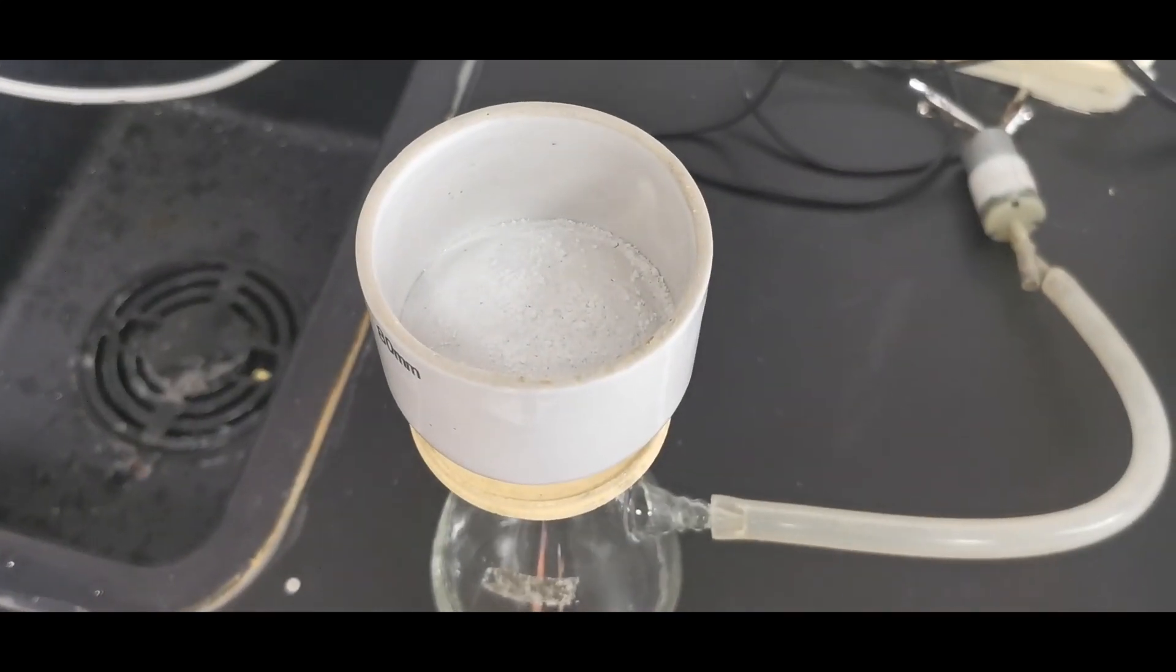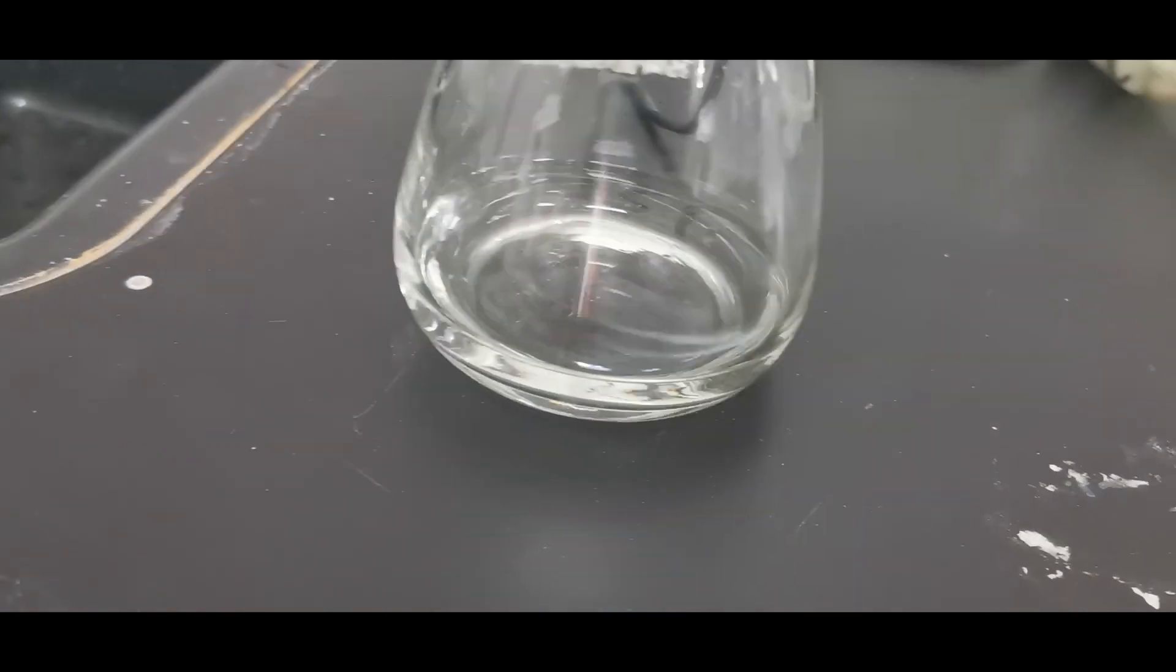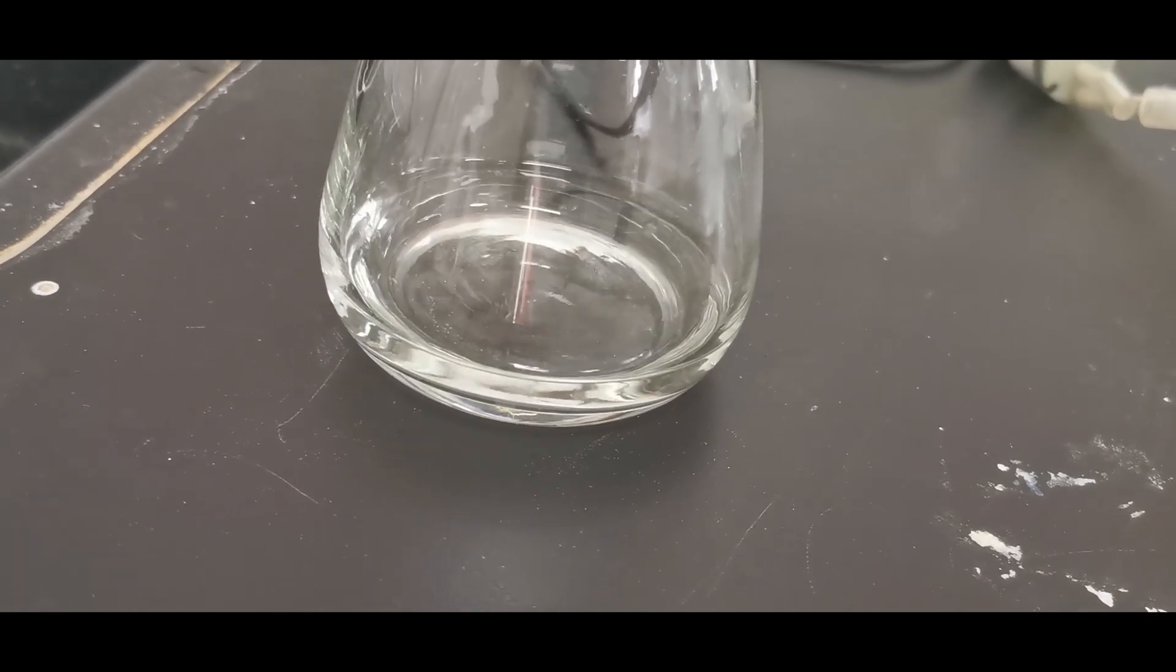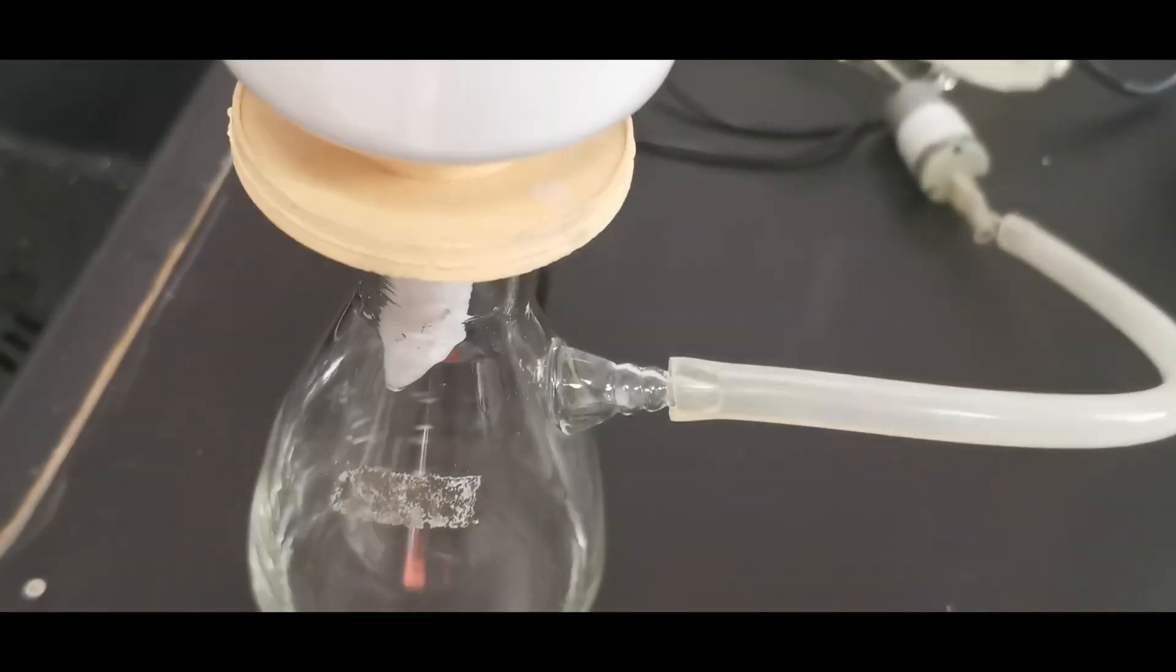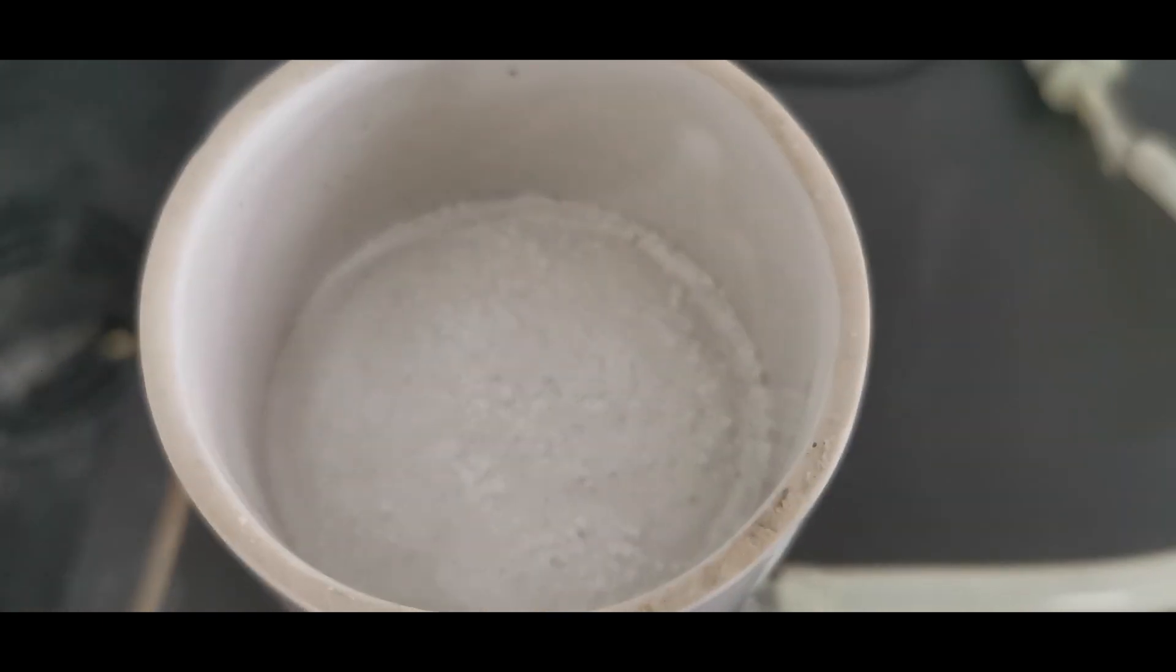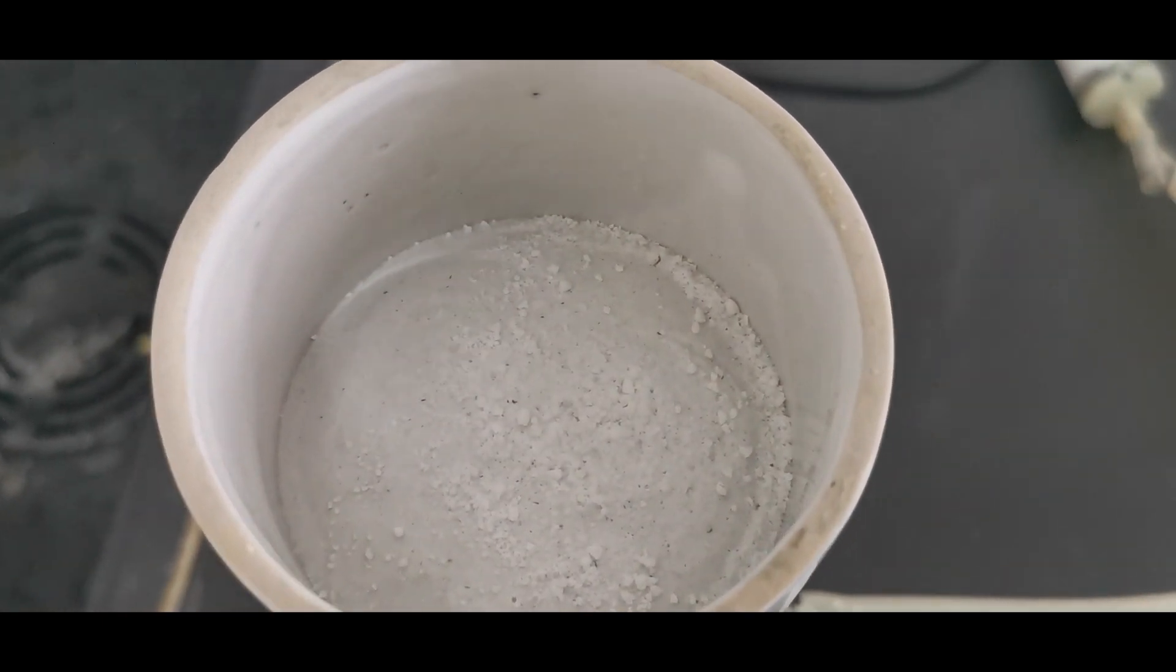After filtration, we're left with a slightly off-white potassium perchlorate product. As you can see, there are some black stuff remaining in it, and you can get rid of them by recrystallization in boiling water. The filtrate is a solution of potassium chloride, chlorate, and perchlorate, which can be recycled to your chlorate cell and produce more perchlorates.